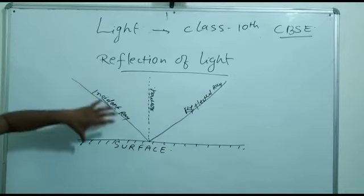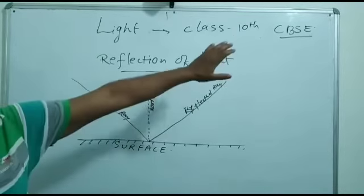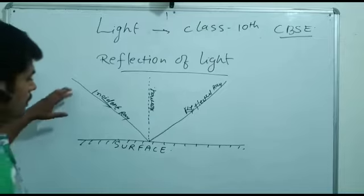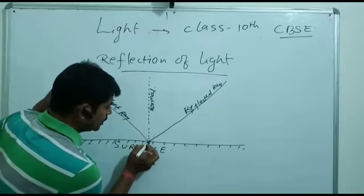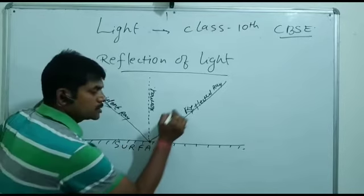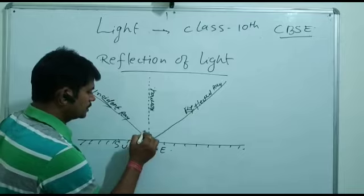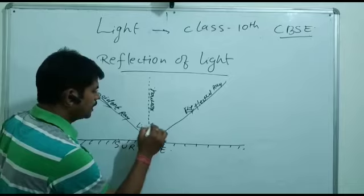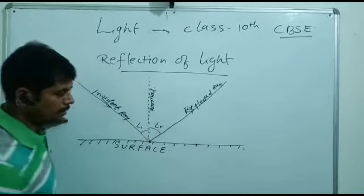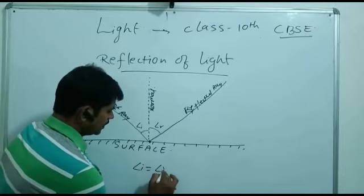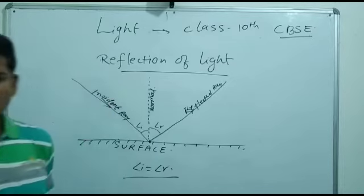The light falls on the surface and is reflected back into the same medium. This is called reflection. The light comes to this point, which is the point of incidence, and from here it bounces back. The incident ray and reflected ray follow the law: angle i is equal to angle r.